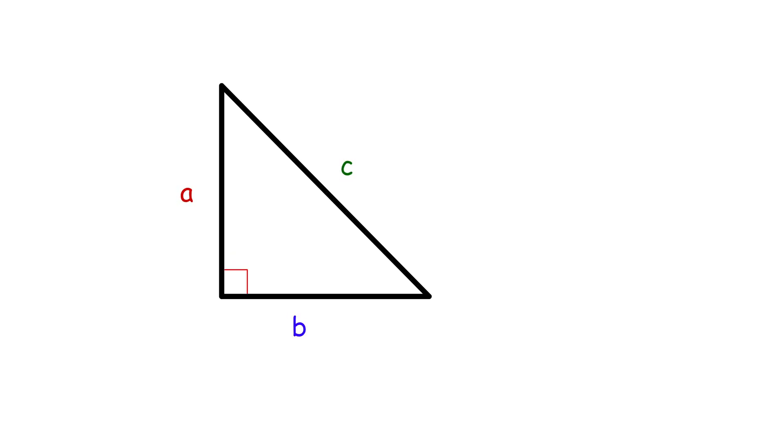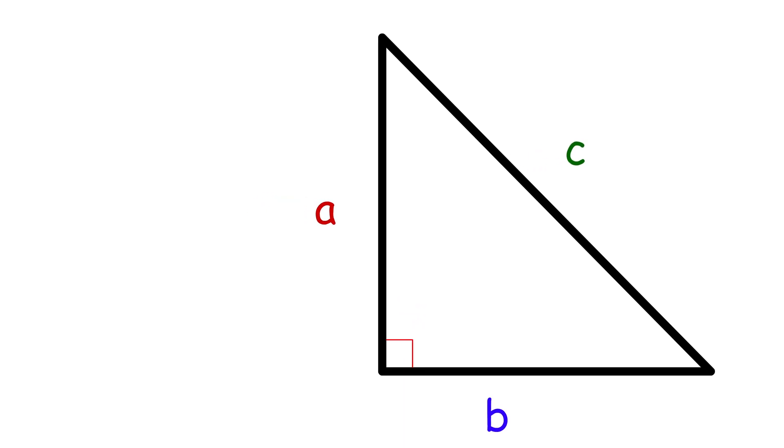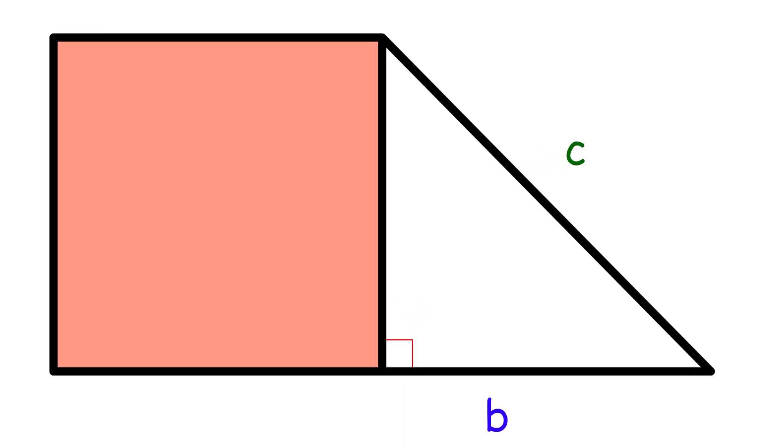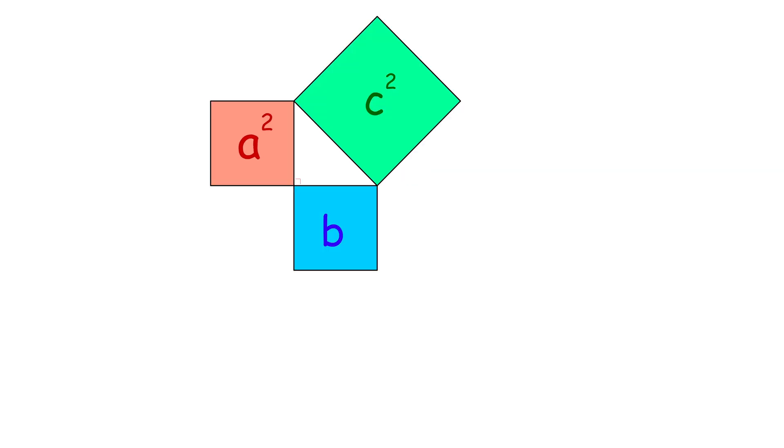A right triangle has one angle that measures 90 degrees. The Pythagorean Theorem states that if you construct a square on each side of a right triangle, then the areas of the two smaller squares will always equal the area of the larger square.